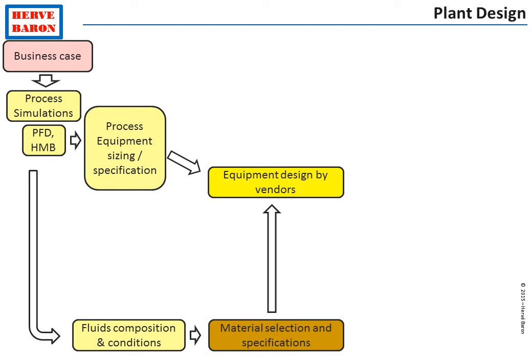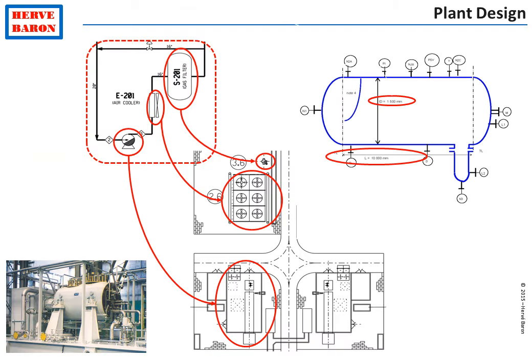Once the vendor has performed its design, it is able to provide the dimensions of the equipment to the engineer, which enables definition of the plant layout. The plant layout results in the production of what is called the plot plan — a plan view of the plant with the various equipment — drawn using the process flow diagrams, the process data sheets for equipment sized by process, as well as information from vendors for equipment only specified by process, such as compressors.